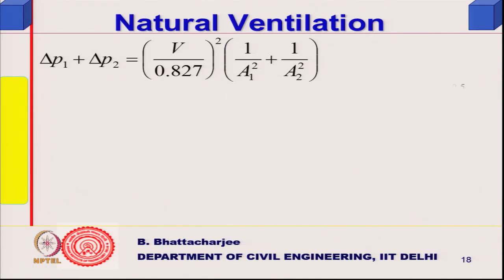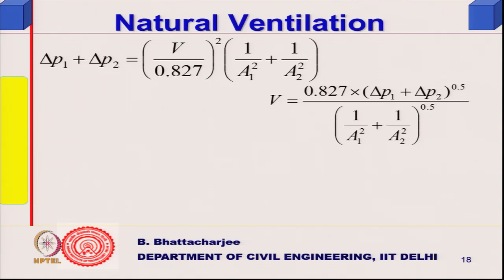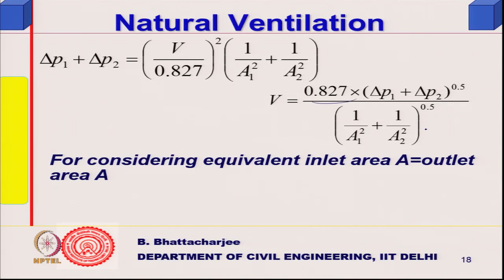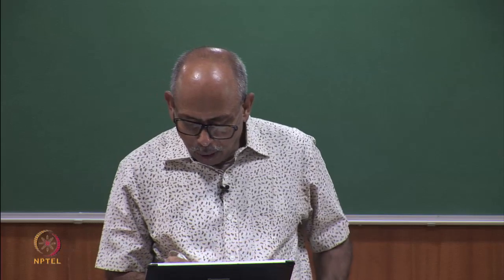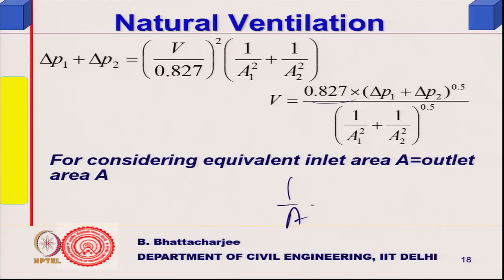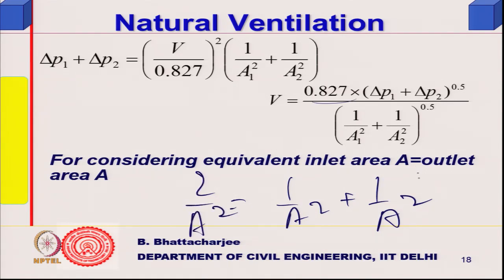To find the equivalent area: write v in terms of the other quantities, then simplify. If inlet and outlet areas are equal, the equivalent expression becomes 2/A-squared, which equals 1/A1-squared plus 1/A2-squared.